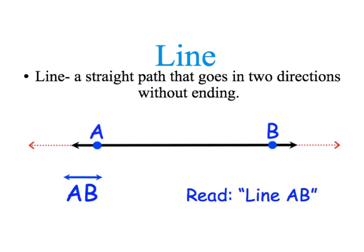A line is a straight path that goes in two directions without ending. And you can see here that it's shown with this arrow on each end. That shows that it goes on and on without ending.